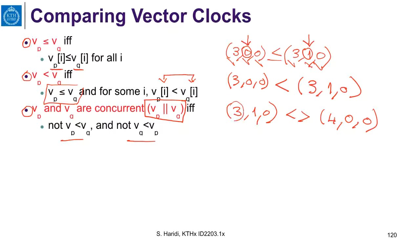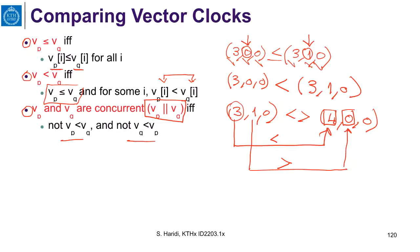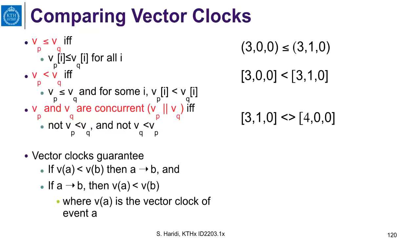For example, the vector (3, 1, 0) is not comparable to the vector (4, 0, 0). The first element of (3, 1, 0) is less than the first element of (4, 0, 0), but the second element of (3, 1, 0) is greater than that of (4, 0, 0). Therefore these two vectors are concurrent and incomparable. Vector clocks guarantee that if one vector is less than the other for events A and B respectively, then A happens before B.